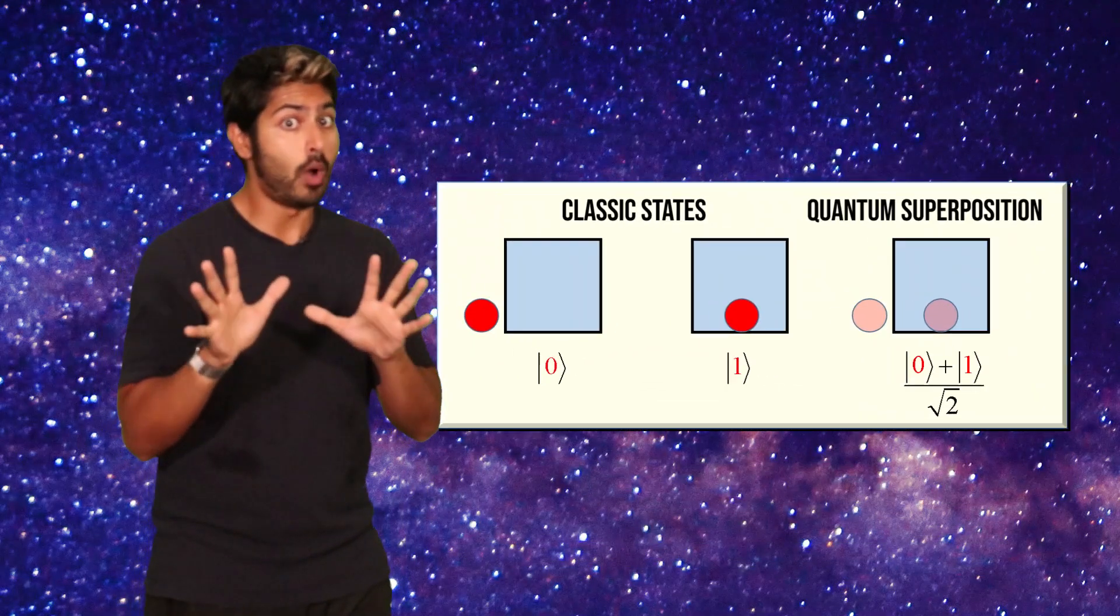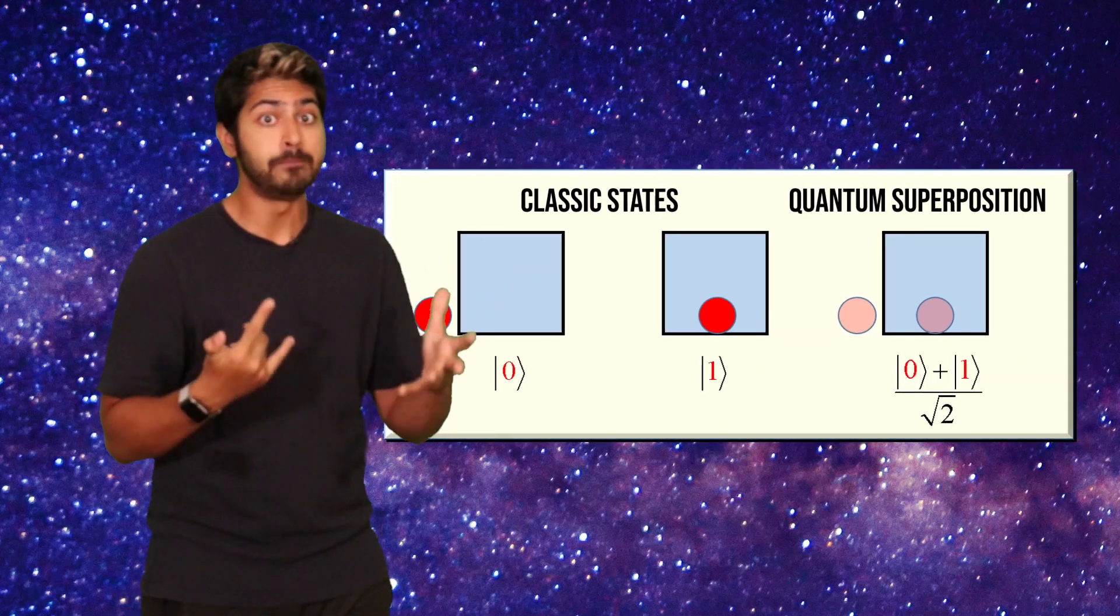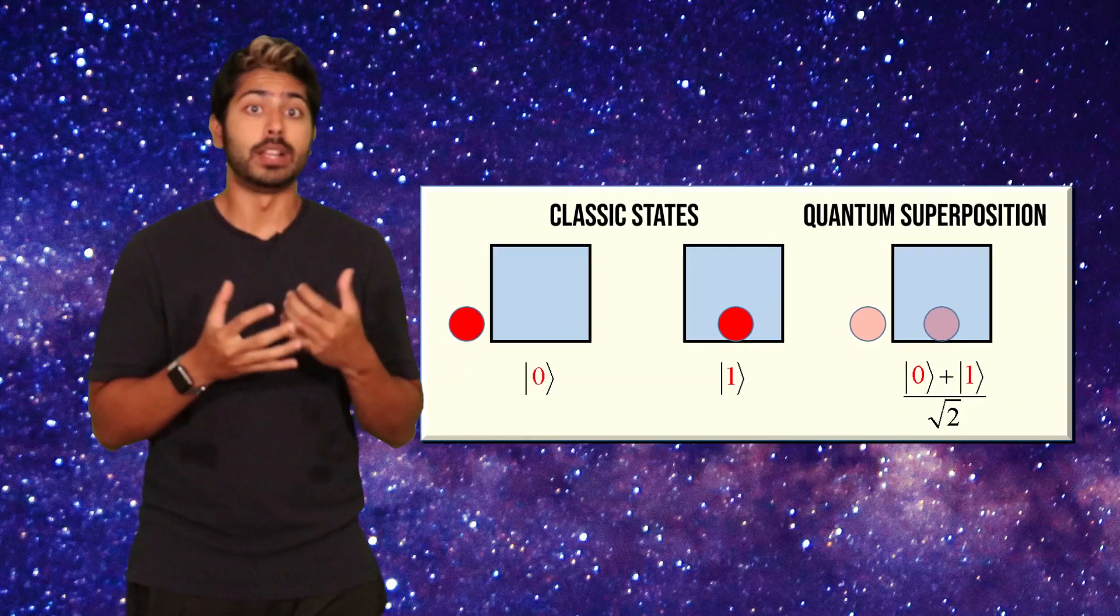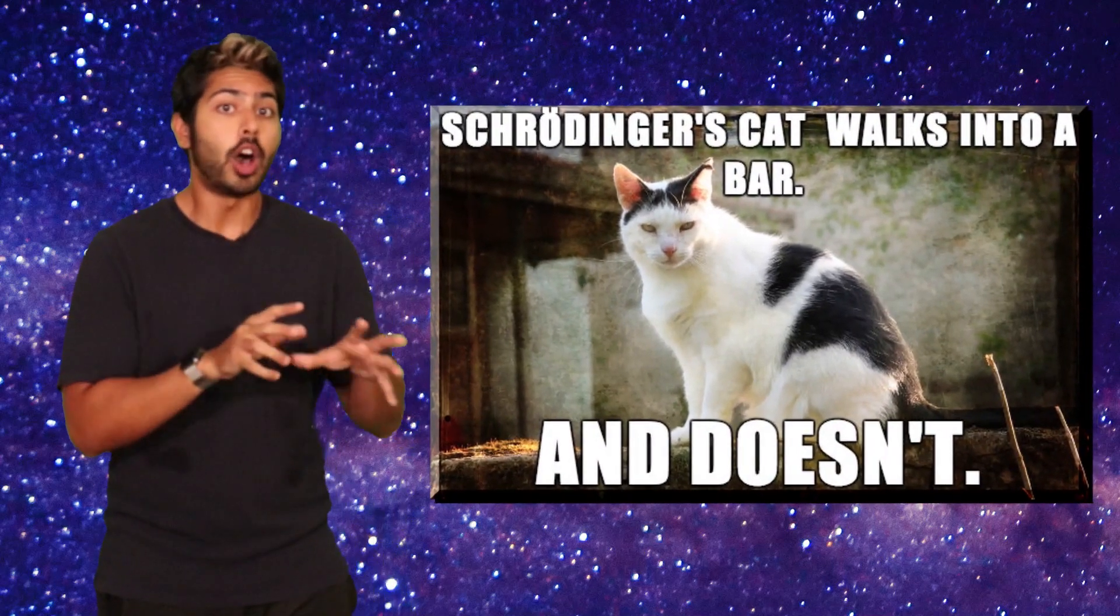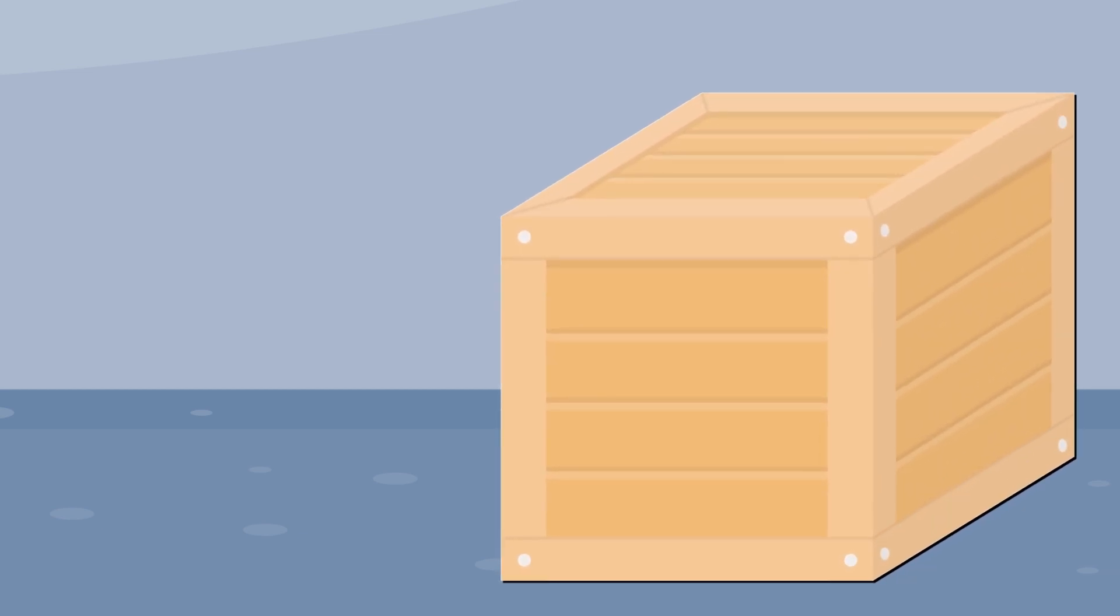This state, by the way, of existing in all possible states simultaneously is called superposition. The Copenhagen interpretation of quantum mechanics was theoretically proven by a famous thought experiment called Schrodinger's cat. In this thought experiment, a physicist puts a cat in a box, along with some radioactive material and a device for detecting radiation.